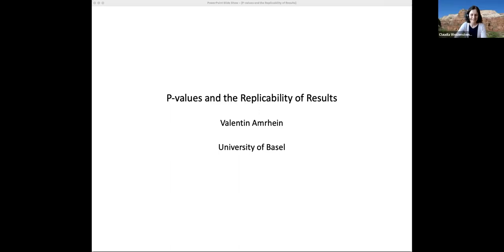Welcome everyone, thanks for joining us today. Our first speaker today is Valentin Amrein. He is a professor of zoology at the University of Basel in Switzerland. He also worked as a science journalist and as head of communications of the Swiss Academies of Arts and Science. In recent years he wrote a number of papers on statistics reform and on problems with and solutions for applying p-values and significance testing. So without further ado, please welcome Valentin.